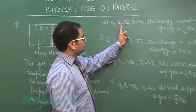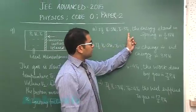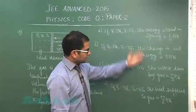If V2 is 2V1, T2 is 3T1, we need to calculate the energy stored, likewise the change in internal energy, work done, and heat supplied.